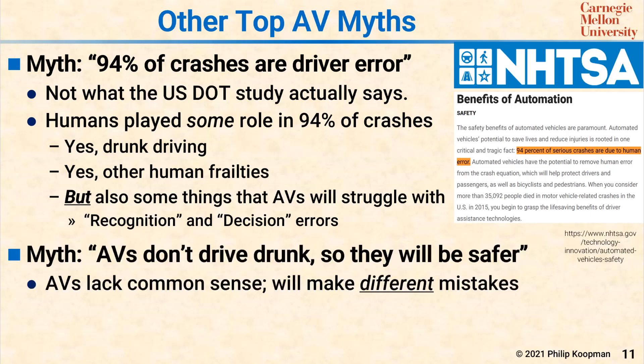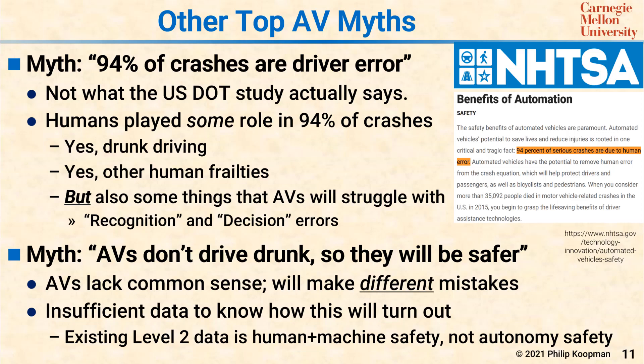Another myth is that automated vehicles don't drive drunk, so they will be safer. The reality is that machine learning-based systems lack common sense, so they are very likely to make different kinds of mistakes. There is insufficient data to know how this will turn out. One hopes that machine-driven vehicles will be better than human drivers, but as of this point there is no concrete proof that will actually be true any time soon. If you look at existing Level 2 vehicle data, remember that's human plus machine safety together — not fully autonomous vehicle safety. There's still a human as a backstop, so that number does not predict, for better or worse, how fully automated vehicles will turn out.